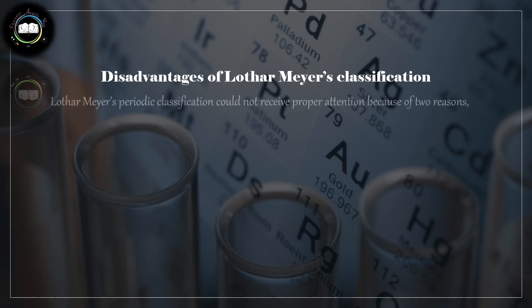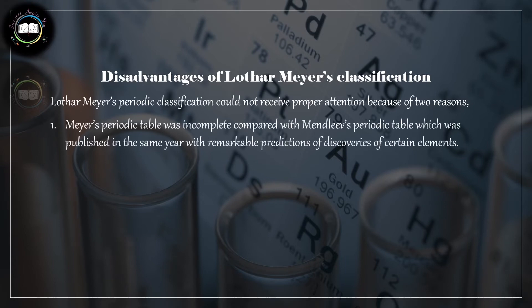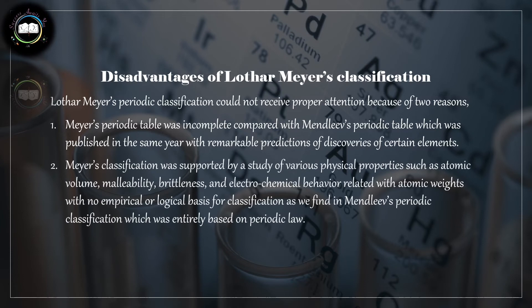Potassium and other alkali metals were at the top, while halogens such as fluorine, chlorine, and bromine were at the ascending part of the curves. A drawback of Meyer's classification was that his periodic table was incomplete compared with Mendeleev's periodic table, which was published in the same year with remarkable predictions.